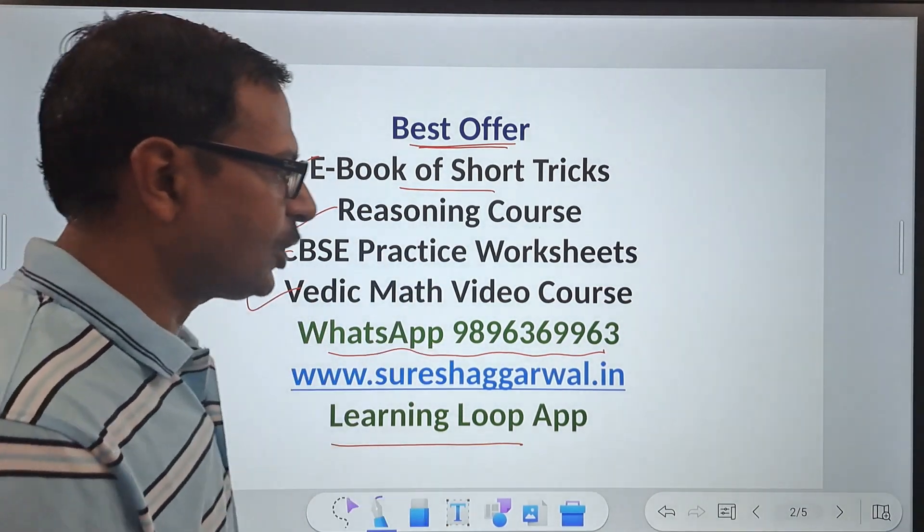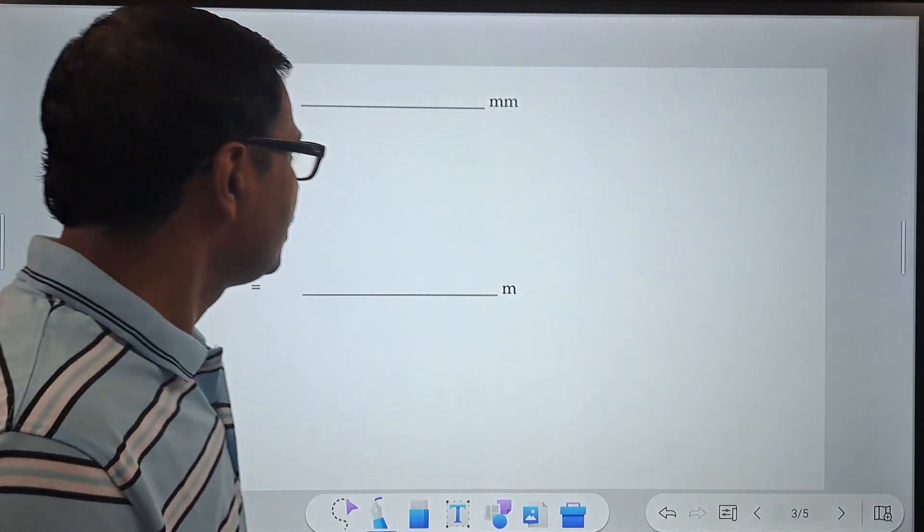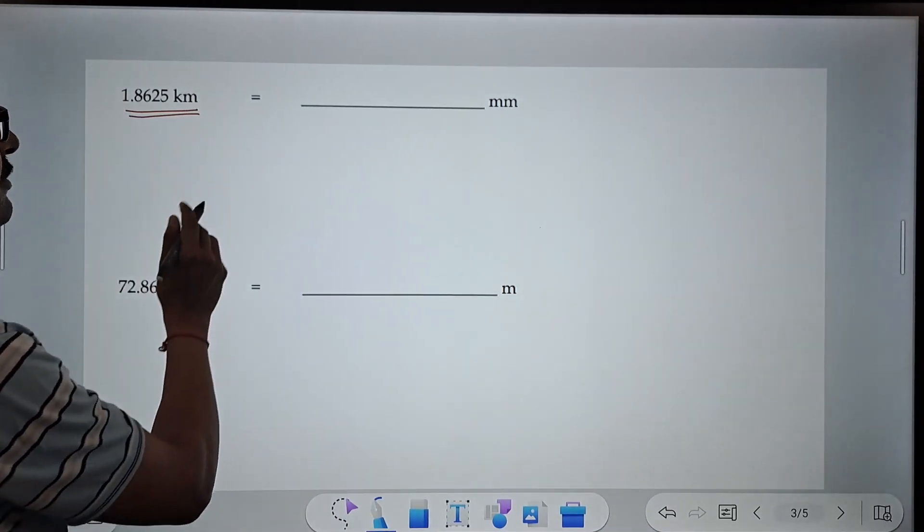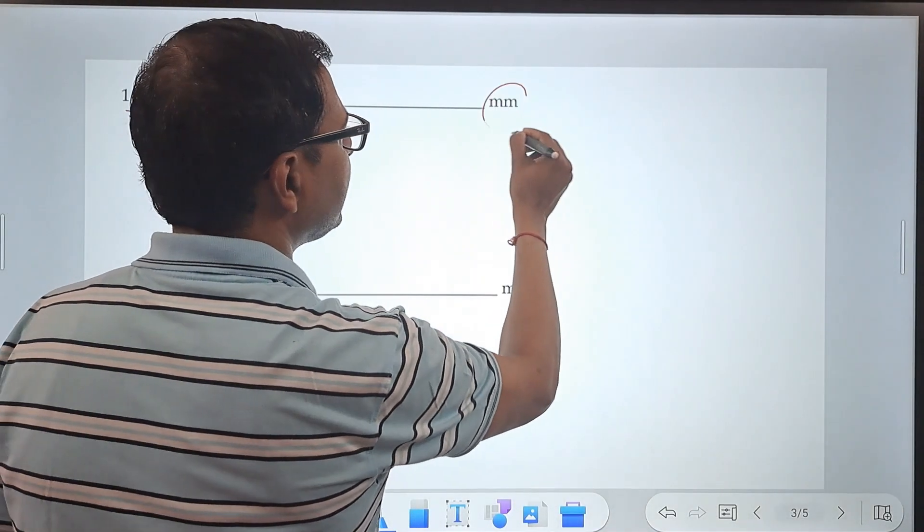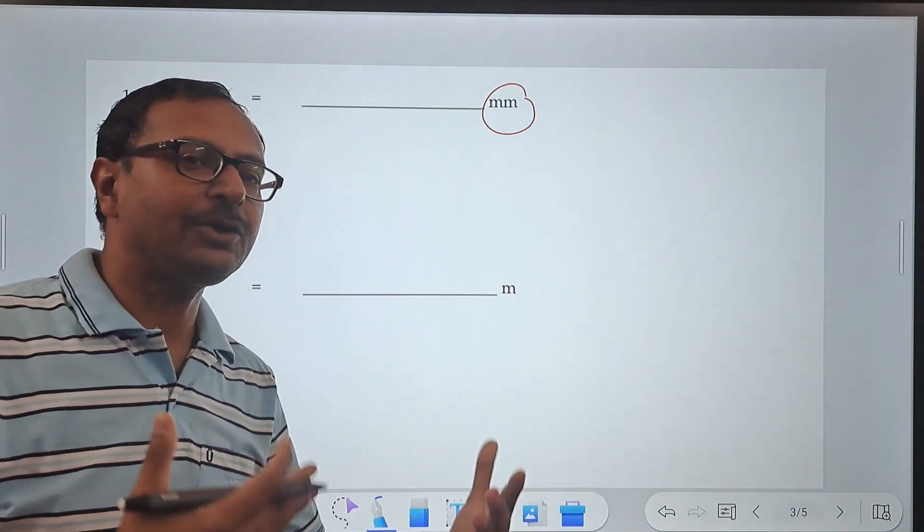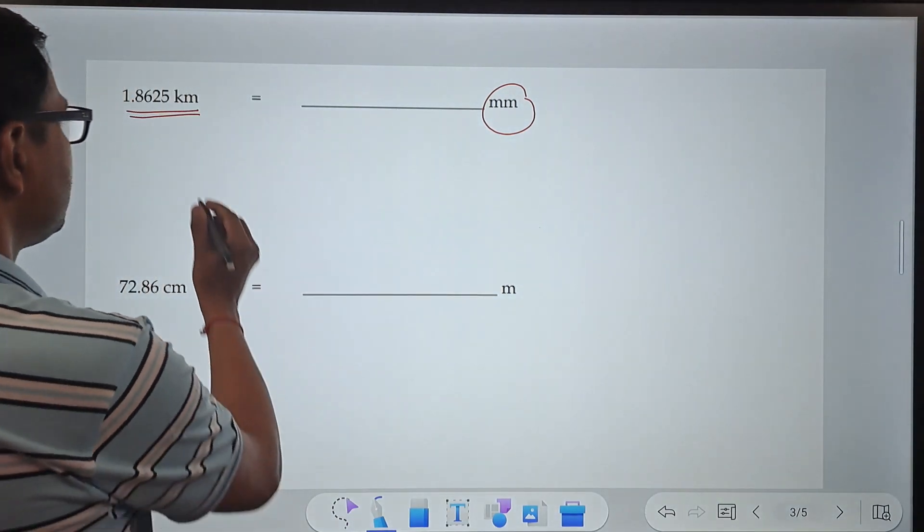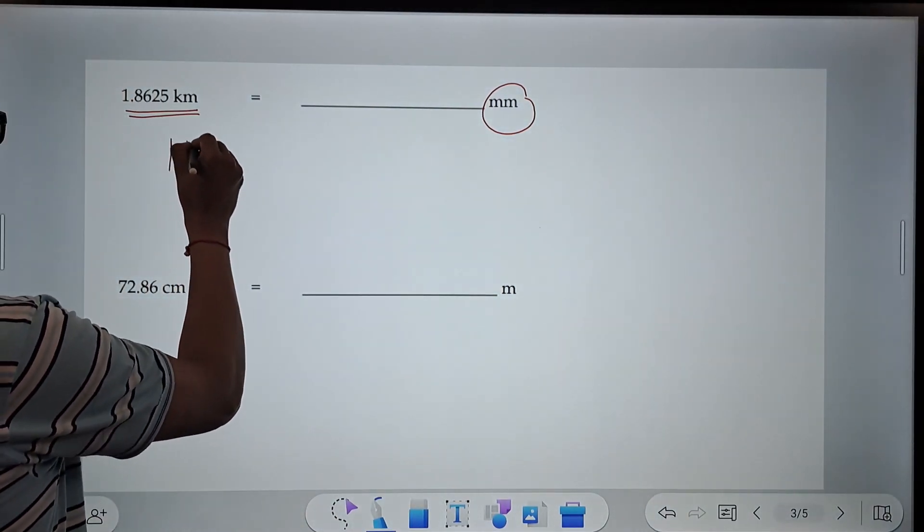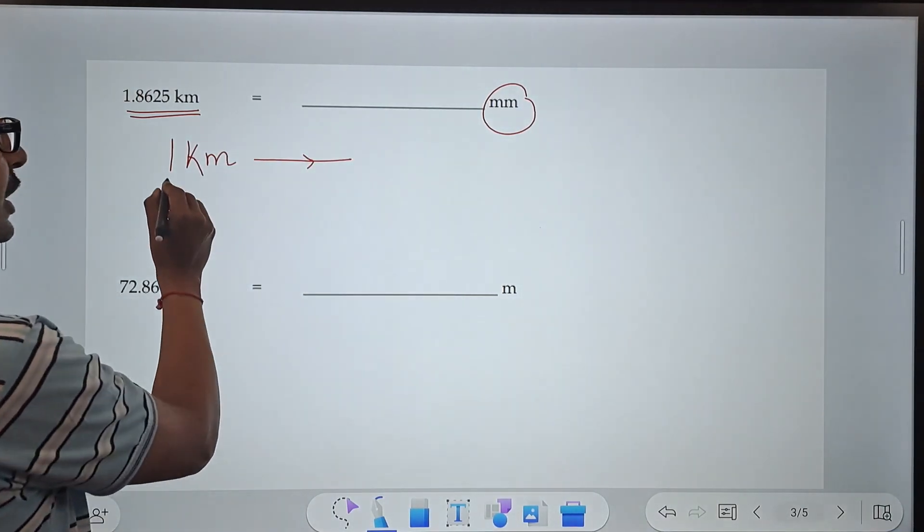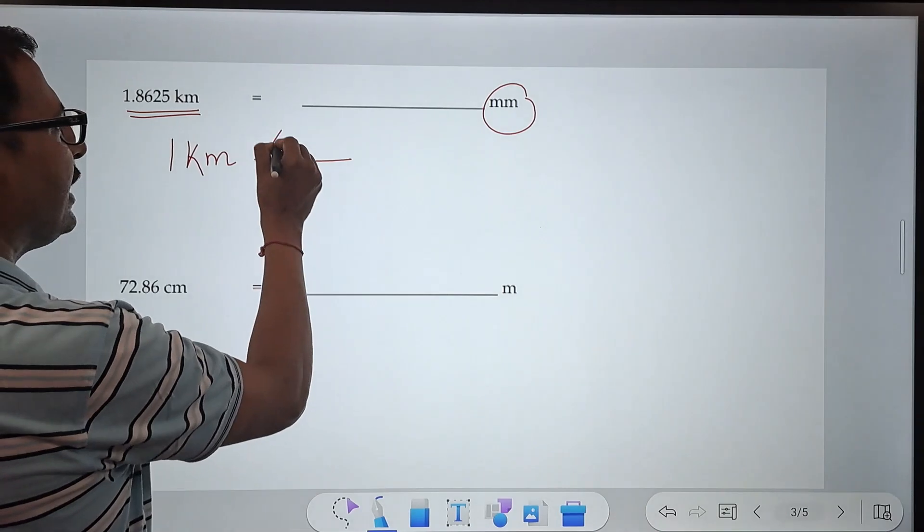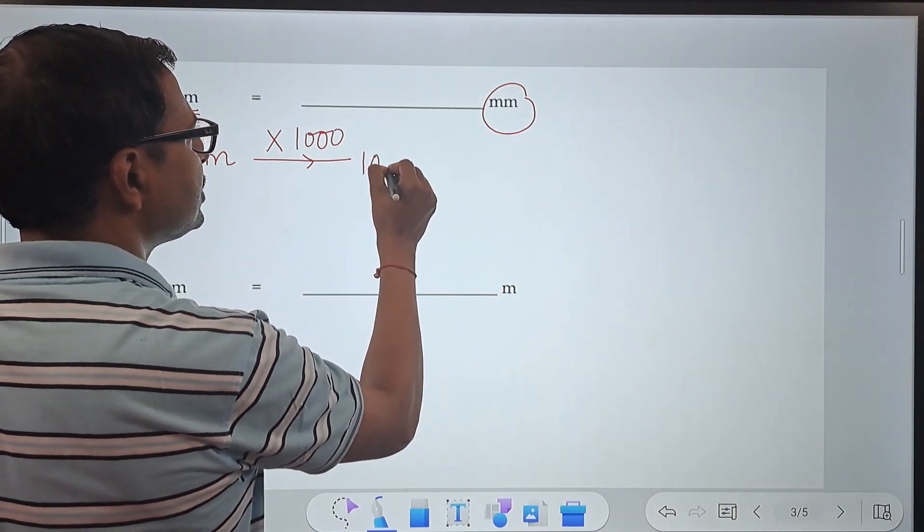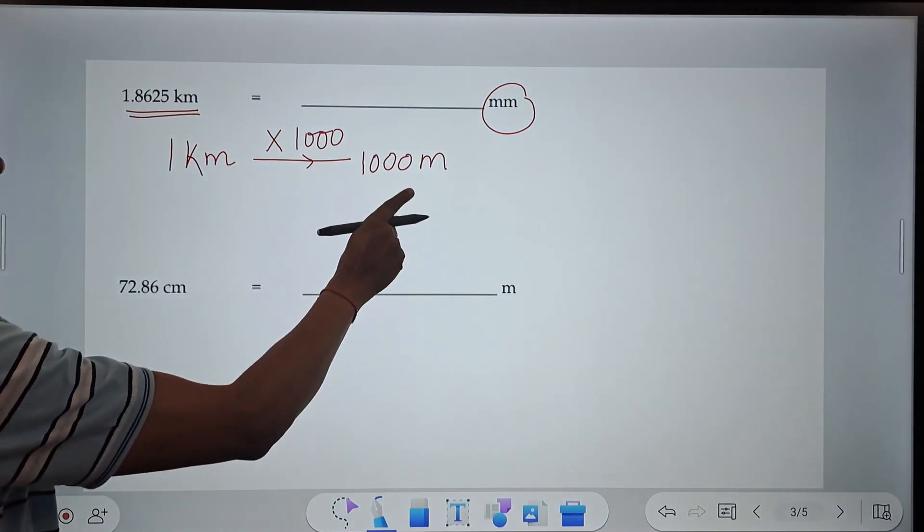So friends, let's see the topic in hand now. The topic is conversion. You can see the first conversion here: 1.8625 kilometers is to be converted to millimeters. Now kilometer is a big unit and we want to convert that to millimeters which is a small unit. So you should know 1 kilometer is to be first converted into meters. Kilo means 1000, so if you multiply that by 1000 you will get 1000 meters.